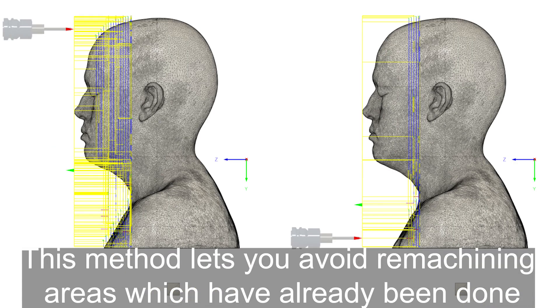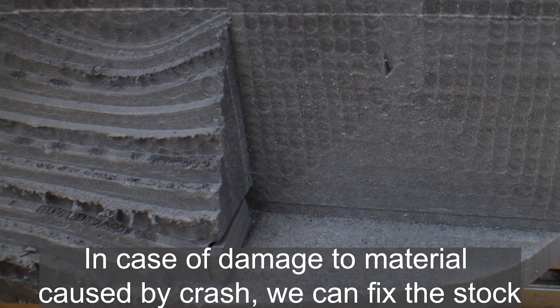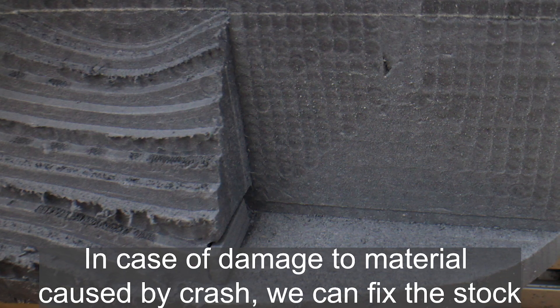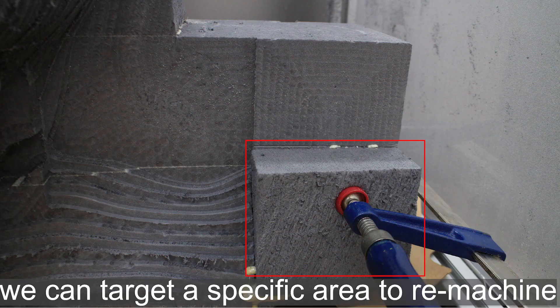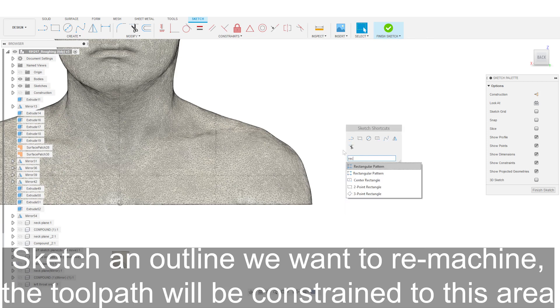In some cases where material has been damaged by a crash, we can fix the stock, then target that specific area to remachine. In Fusion 360, start by sketching an outline that we want to remachine.